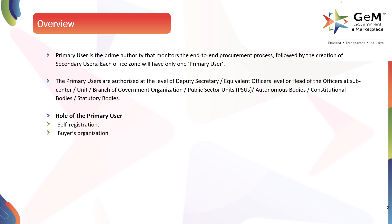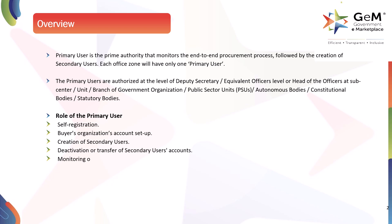The roles of the primary user include: self-registration, buyer's organization's account setup, creation of secondary users, deactivation or transfer of secondary users' accounts, monitoring of orders placed, and administration of GeM procurement.